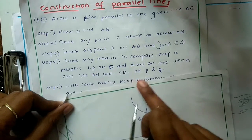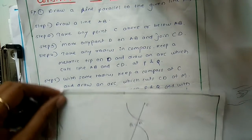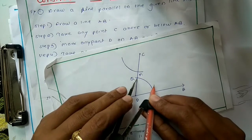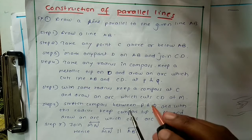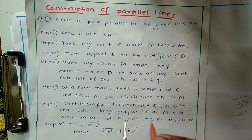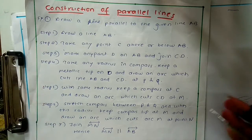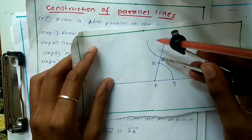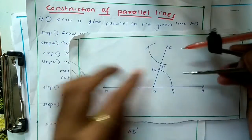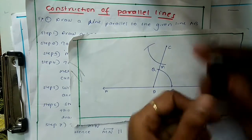Next, stretch the compass between P and Q to take that radius. Then keep the compass at M and draw an arc which cuts the arc at a new point N. This gives us the second point we need.